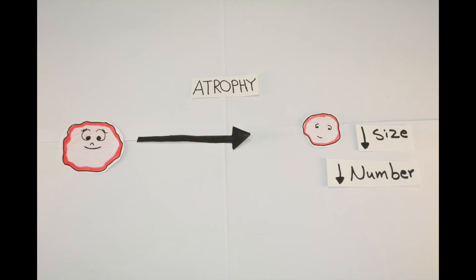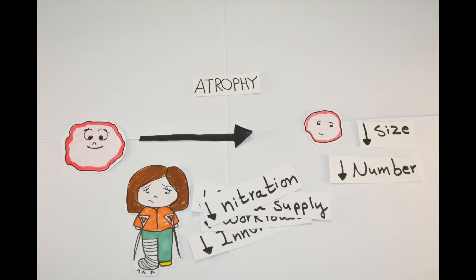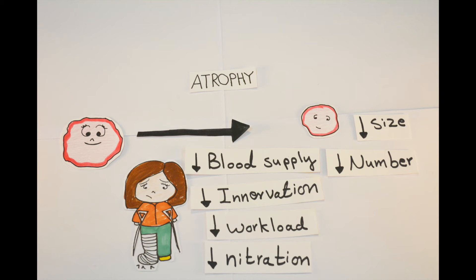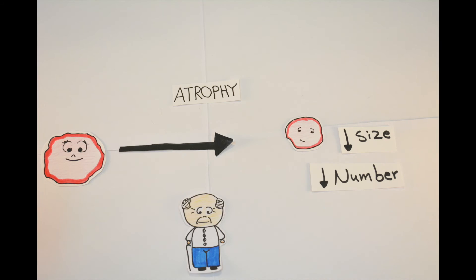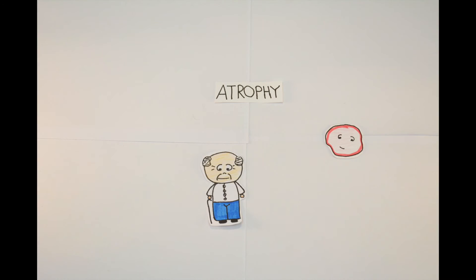To explain the causes, let's take this example. A young woman had a limb fracture and the splint was so tight that the blood and nerve supply was decreased. She got depressed and didn't eat well for three weeks. There are four reasons for atrophy in this case: decreased workload since she couldn't move her limb, decreased blood supply, loss of innervation, and poor nutrition.